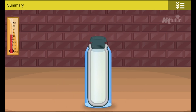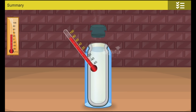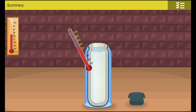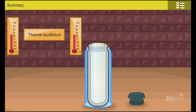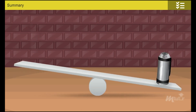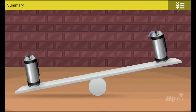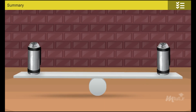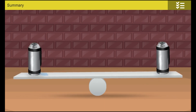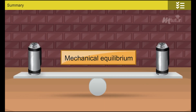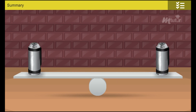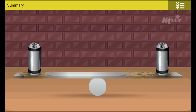Thermodynamic equilibrium satisfies the following conditions: thermal equilibrium — the temperatures of a system and its surroundings become uniform; mechanical equilibrium — there is no unbalanced force within a system and between the system and its surroundings; chemical equilibrium — there is no chemical reaction within the system.